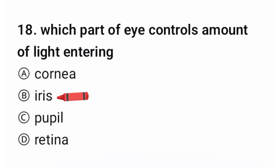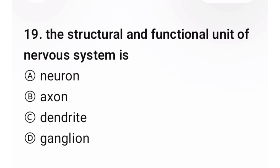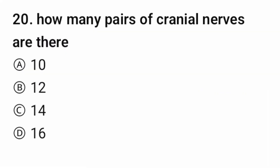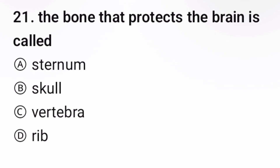Question 19: The structural and functional unit of the nervous system is — correct option is A. Question 20: How many pairs of cranial nerves are there? The correct option is B. Question 21: The structure that protects the brain is called — the correct option is B, skull.